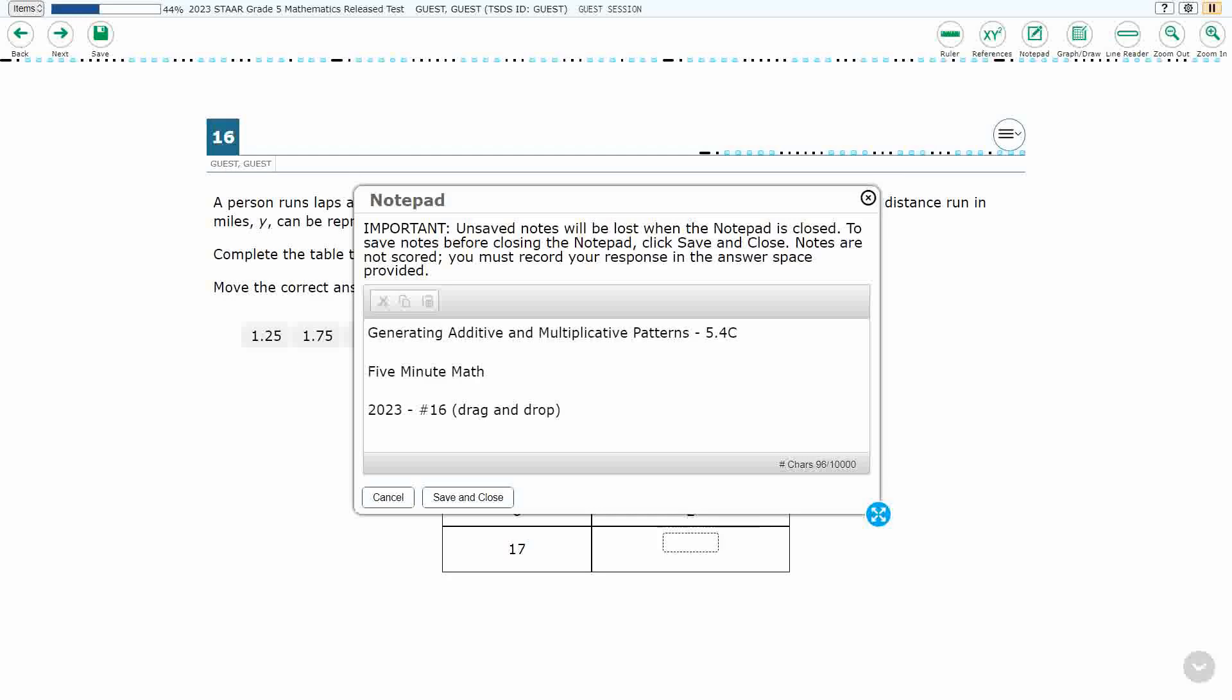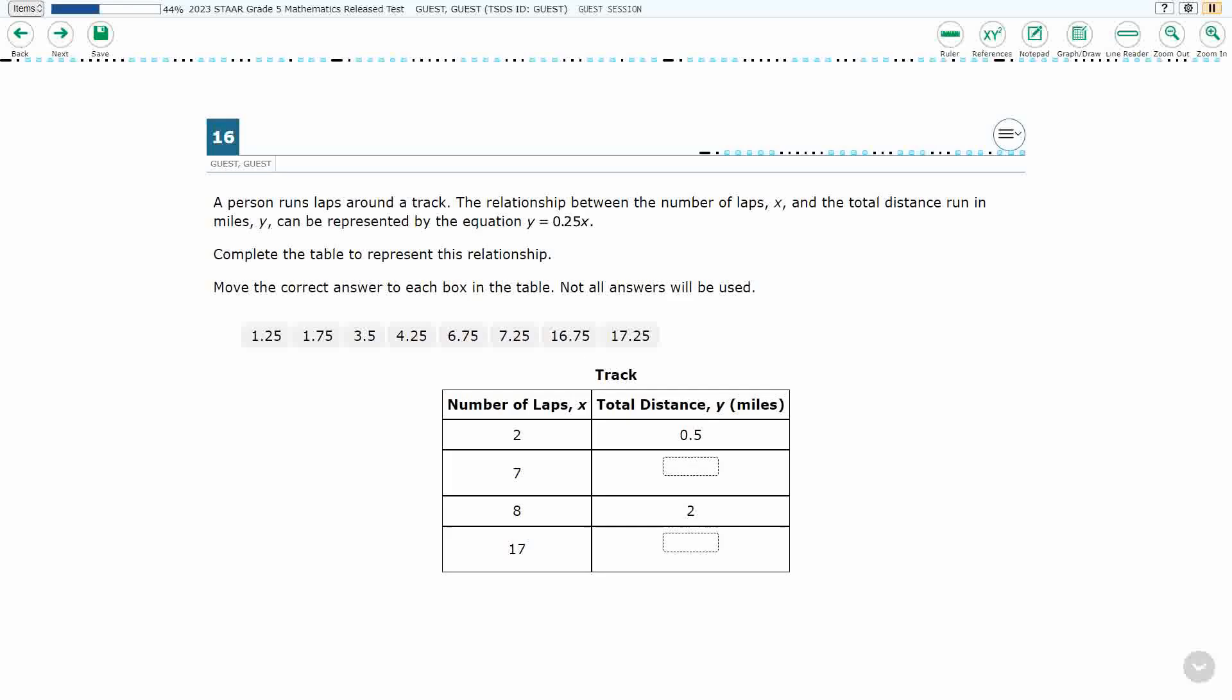This is Standard 5.4c in the great state of Texas, and we are using item number 16, which is a new item type called drag and drop, of the 2023 released STAAR test.